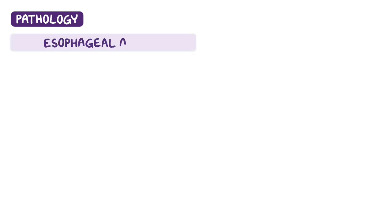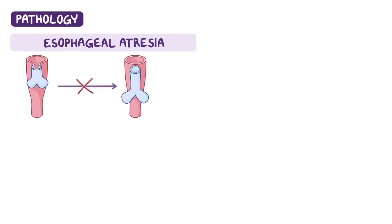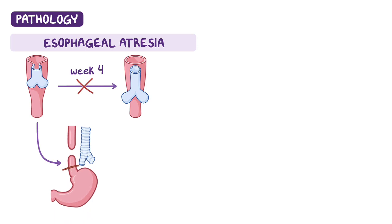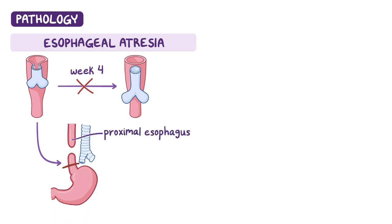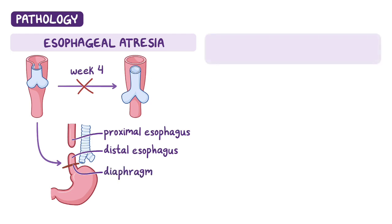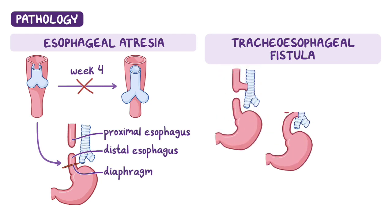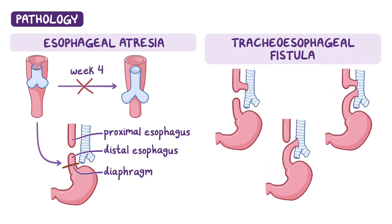Now let's look at the pathology of these conditions. With esophageal atresia, the esophagus fails to elongate and connect to the stomach around week 4 of intrauterine development. So essentially, there's a proximal esophagus that ends in a blind pouch and a distal esophagus which ends right above the diaphragm. This is commonly associated with a tracheoesophageal fistula, which is a connection between the trachea and either the proximal, the distal, or both parts of the esophagus.